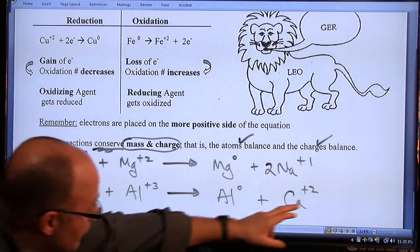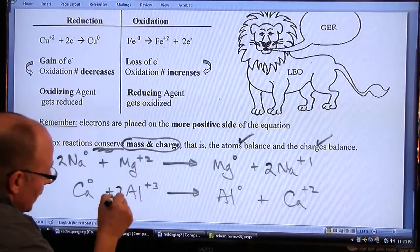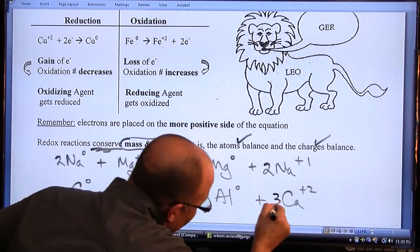And since 3 and 2 go into 6 as their first multiple, you could multiply this by 2 to get a plus 6, and this by 3 to get a plus 6.